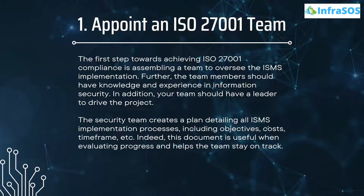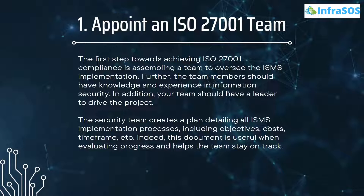First, we need to appoint an ISO 27001 team. The first step towards achieving the ISO 27001 standard is to assemble a team to oversee the ISMS implementation. Team members should have knowledge and experience in information security, and your team should have a leader to drive the project. The security team creates a plan detailing all ISMS implementation processes, including objectives, cost, timeframes, etc. This document is useful when evaluating progress and helps the team stay on track.